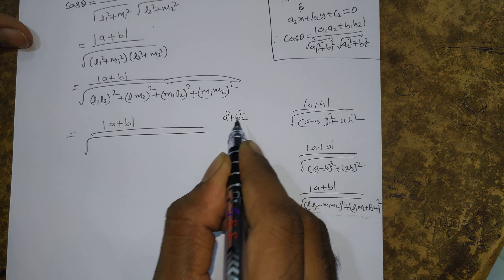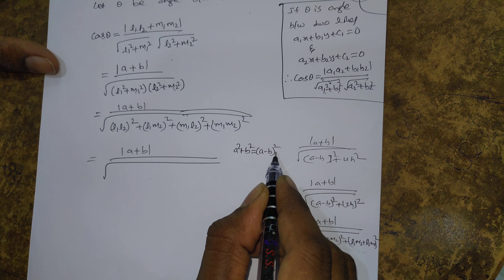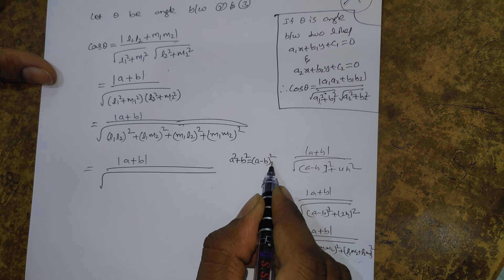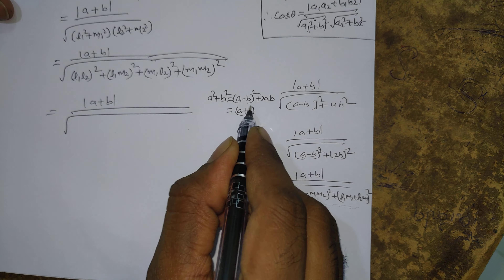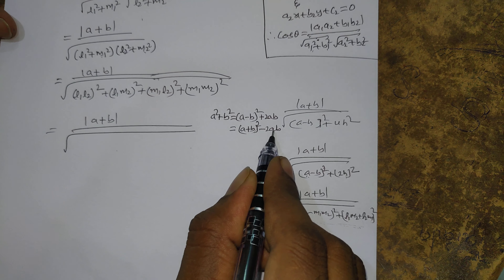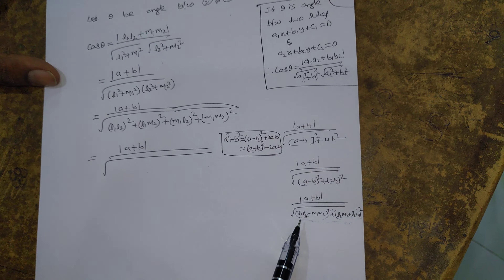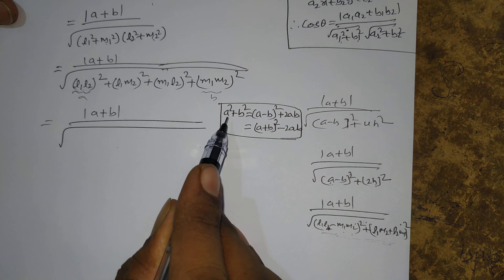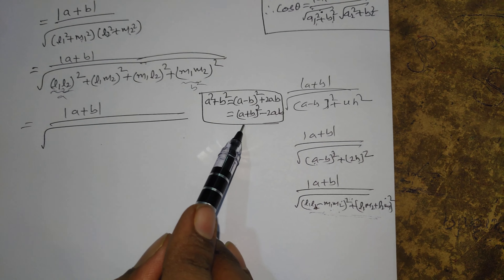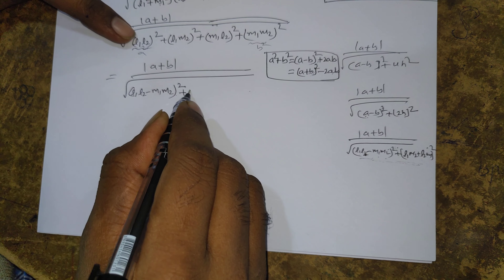Using the algebraic identity: a² + b² = (a - b)² + 2ab. So (L1·L2)² + (M1·M2)² = (L1·L2 - M1·M2)² + 2·(L1·L2)·(M1·M2). Similarly, a² + b² = (a + b)² - 2ab, so (L1·M2)² + (L2·M1)² = (L1·M2 + L2·M1)² - 2·L1·L2·M1·M2.